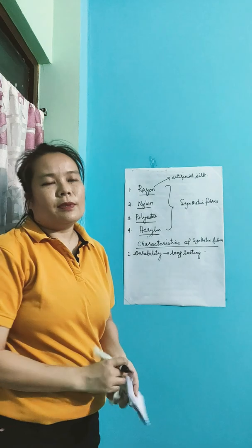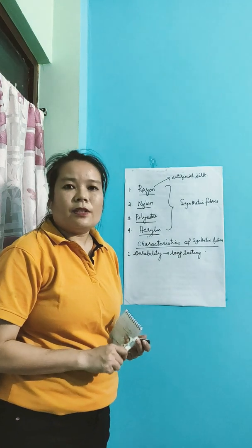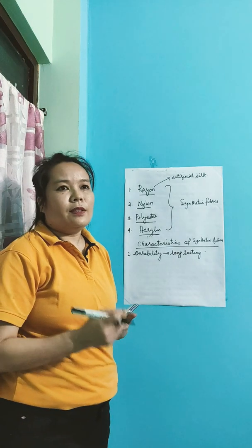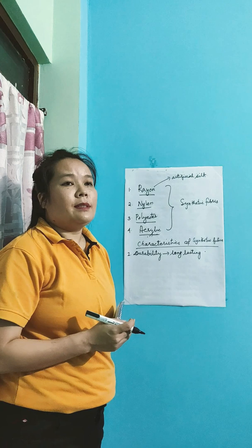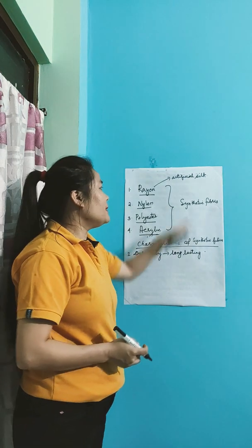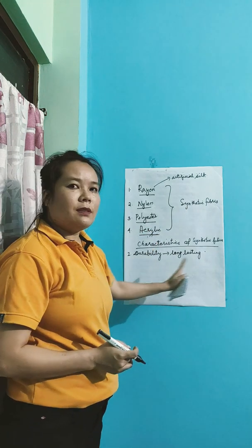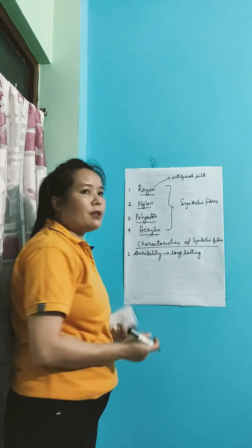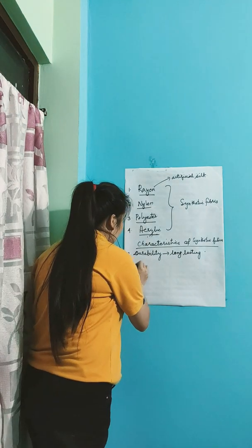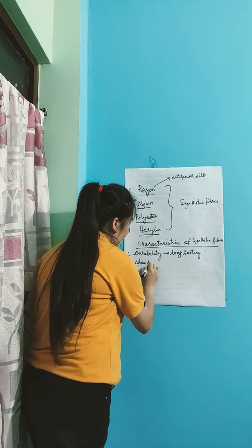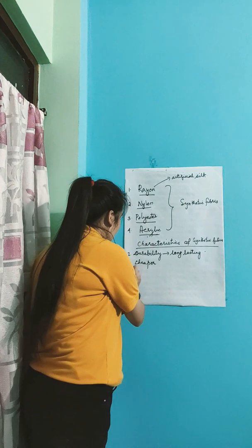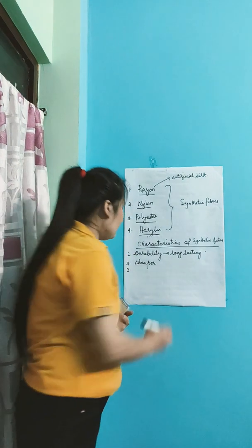The clothes which are made up of synthetic fibers last long. Durability means it should last long, and synthetic fiber clothes maintain their quality, including colors. Number two, they are quite cheaper in comparison to natural fibers. Number three, they are also light in weight.